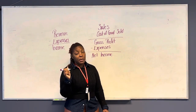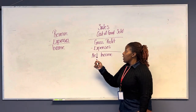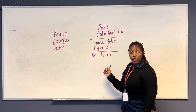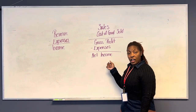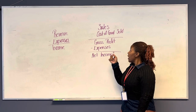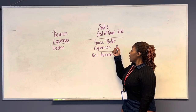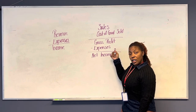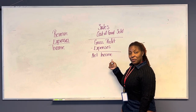Looking behind me, you now see the two types, the two formulas, in order to get your net income. Here is where we are now for the retail business: sales minus cost of goods sold equals gross profit, minus your expenses, equals net income.